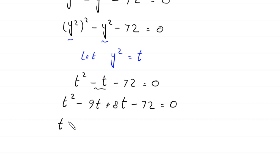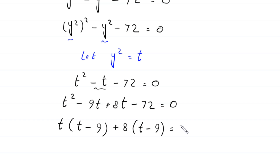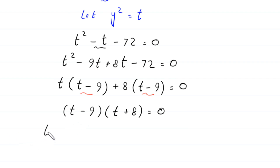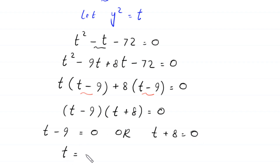From the first two terms we factor out t, and from the last two terms we factor out 8, giving t(t−9) + 8(t−9) = 0. Factoring out (t−9): (t−9)(t+8) = 0. So either t−9=0 giving t=9, or t+8=0 giving t=−8. Recalling that y²=t: